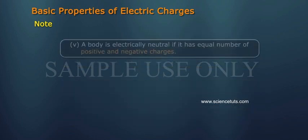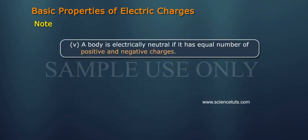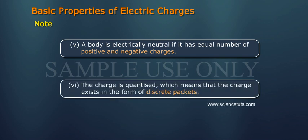Note 5: A body is electrically neutral if it has equal number of positive and negative charges. Note 6: The charge is quantized, which means that the charge exists in the form of discrete packets.